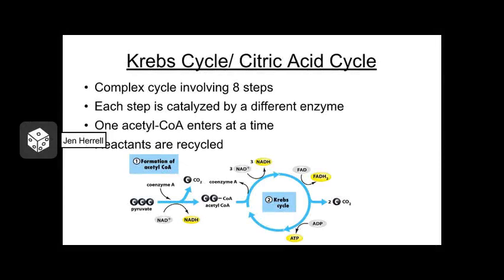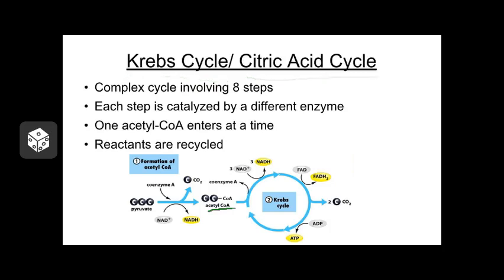The next major step of cellular respiration is the most complicated — a big cycle known as the Krebs cycle, or citric acid cycle. This cycle consists of eight different steps catalyzed by eight different enzymes. Essentially, acetyl-CoA goes in, is affected by a number of enzymes, and energy products are harvested, including NADH, FADH2, and ATP. This is the last step of glucose breakdown — the last point at which we can get any more energy out of the original glucose molecule. A waste product of the Krebs cycle is CO2, which we breathe out.